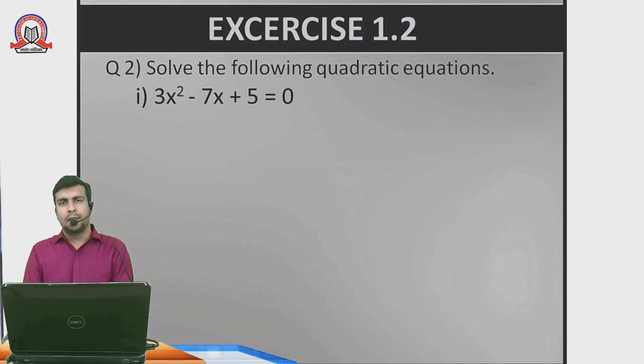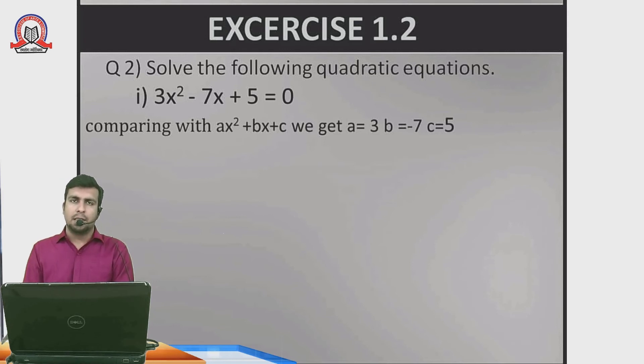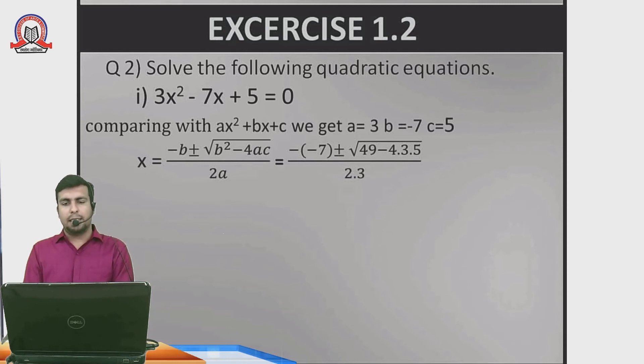Next: 3x square minus 7x plus 5 equals 0. Using the same steps, comparing with ax square plus bx plus c, we get a equals 3, b equals minus 7, c equals 5. Using the formula: x equals minus (minus 7) plus or minus root of 49 minus 4 times 3 times 5 upon 2 times 3. That's 7 plus or minus root of 49 minus 60 upon 6, which is 7 plus or minus root of minus 11 upon 6.